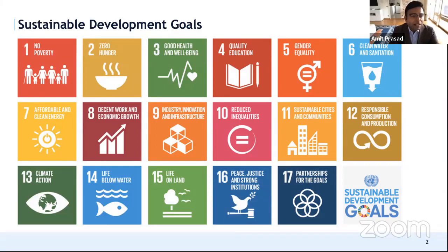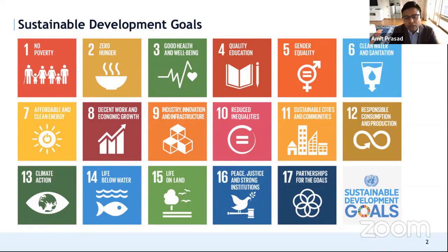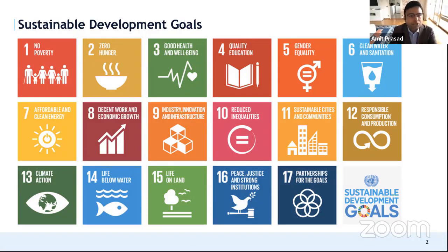There are 169 targets. A target is where we have a specific, usually quantitative goal. For example, in health we have a target around reducing the maternal mortality ratio by 30% between 2016 and 2030. And this is how 169 targets are defined across all of the 17 goals. In addition, there are 232 indicators that are used to measure progress towards the sustainable development goals.